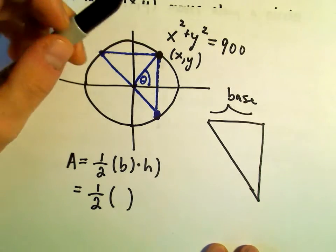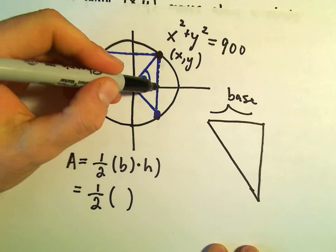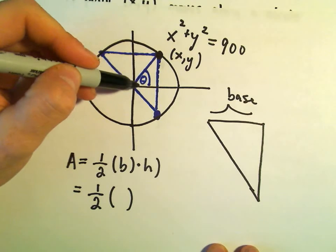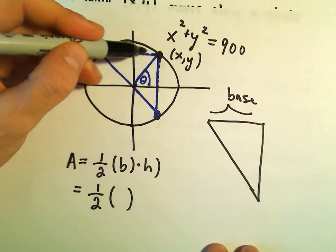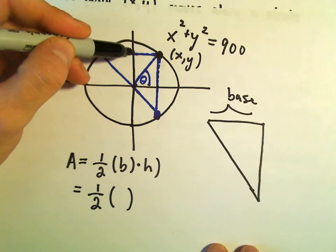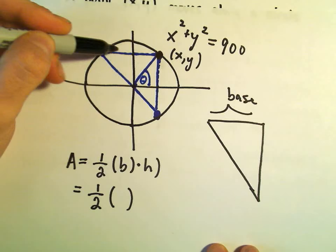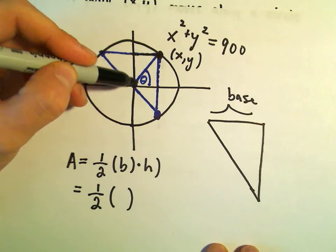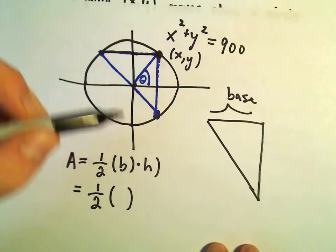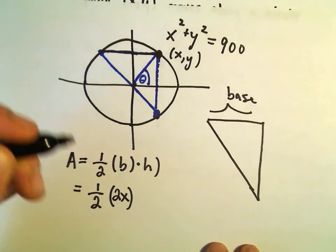Well, if you think about the base, how far have we gone over? Well, if we're at the point (x, y), we've basically gone over x units. Well, that means we've gone x units this way. Since it's symmetric, that means we would have gone x units this way. So, if this length is x, that means the entire base would have length 2x.